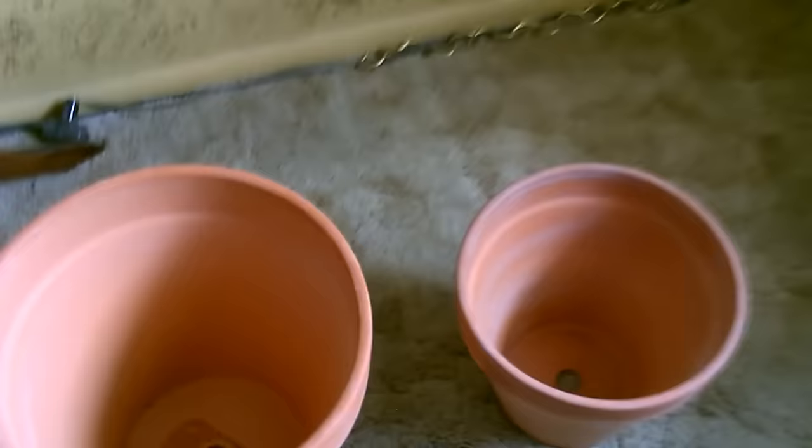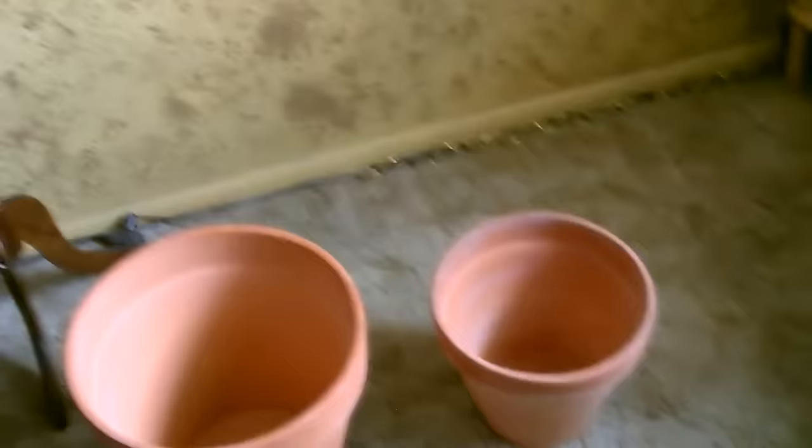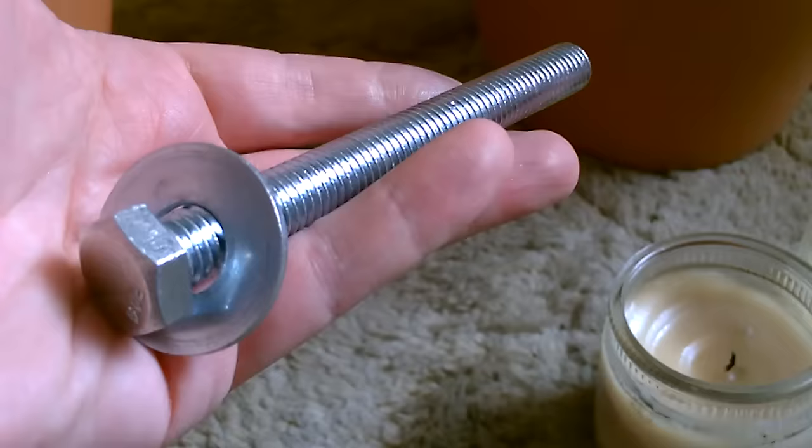You put those two together, small pot inside the big pot, flip it over, put it up on a little stand. I'm just going to use three bricks like that, should be fine. Throw the candles on the plate and those pots get extremely hot fast.